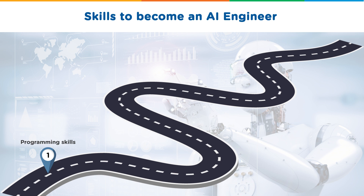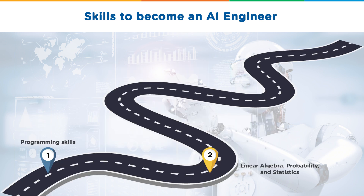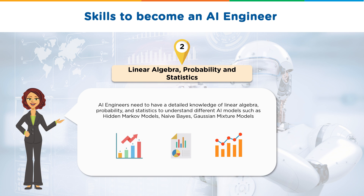Next up, let's talk about the skills required to become an AI engineer. First, programming skills — it's very important to learn programming languages such as Python, R, Java, and C++ to be able to build and implement models. The second skill is linear algebra, probability, and statistics. To understand and implement different AI models such as hidden Markov models, naive Bayes, Gaussian mixture models, and linear discriminant analysis, you need detailed knowledge of linear algebra, probability, and statistics.